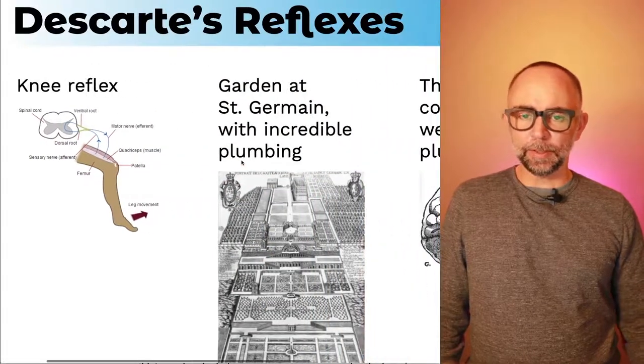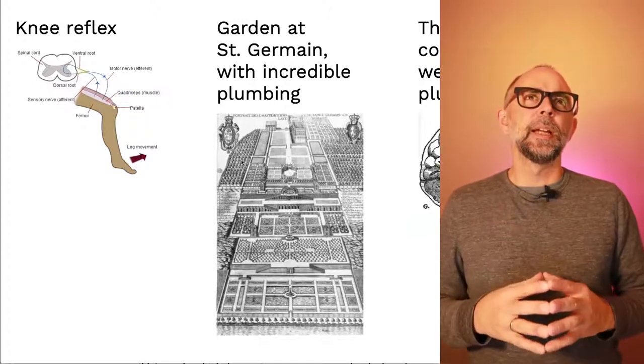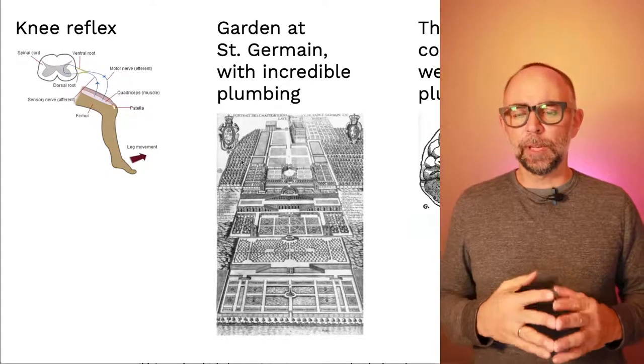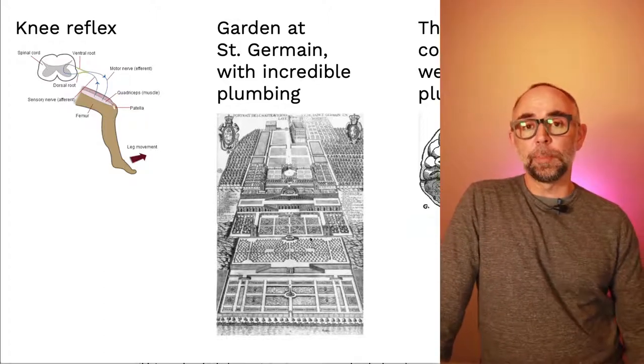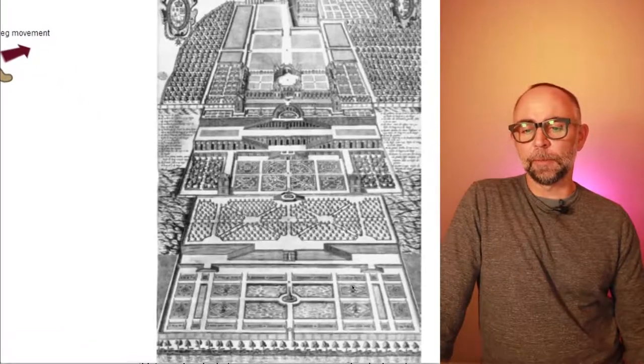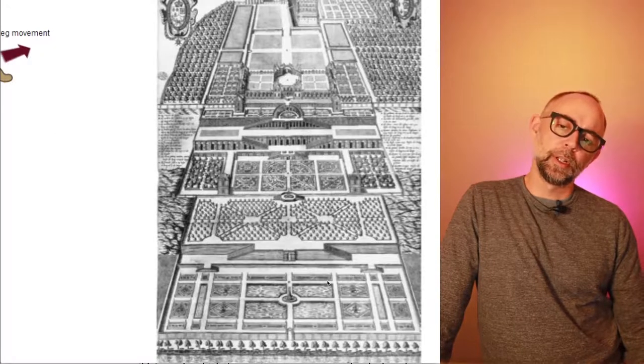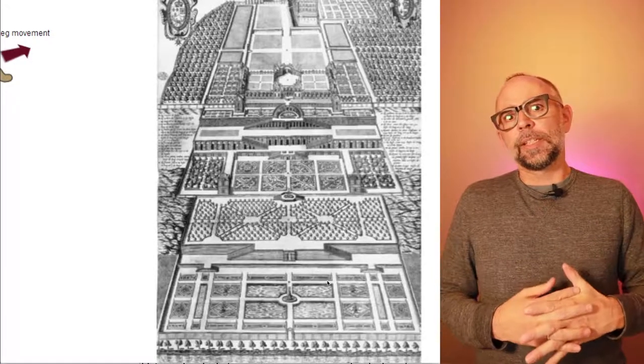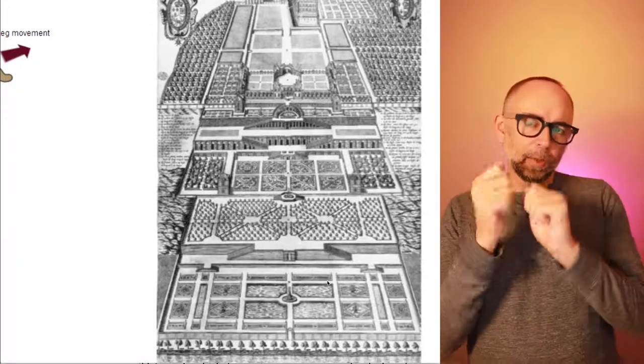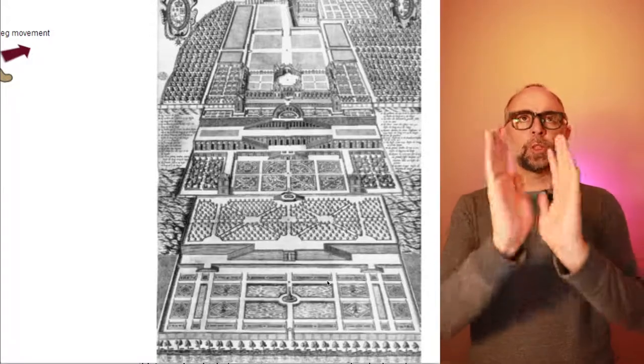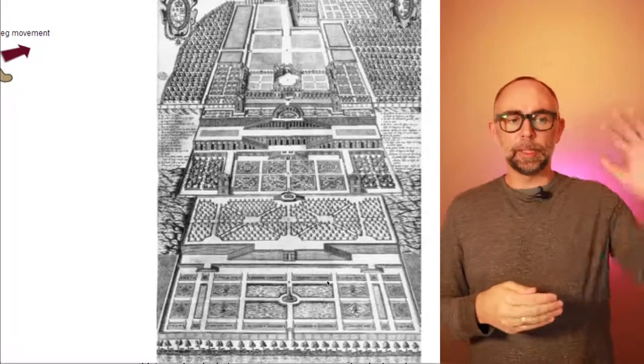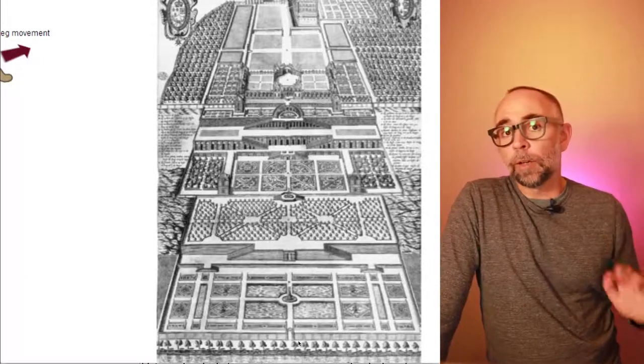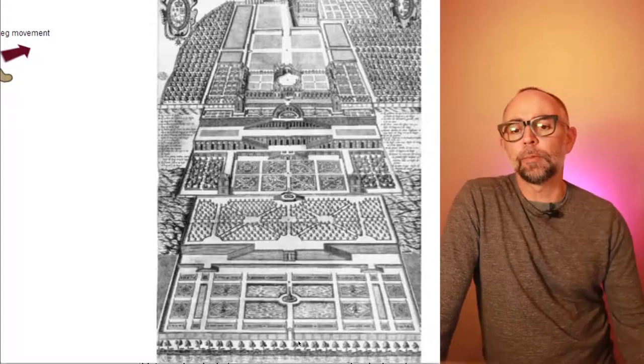So Rene knew about these reflexes. And he was thinking about them metaphorically because he had an example in mind. This thing called the Garden at Saint Germain. It was a garden of his time. And it had apparently a really incredible plumbing situation. Here's a picture of it. We could see there's maybe some fountains and stuff and there's trees and a big garden. One of the apparently notable features of this garden was these statues. These statues would be connected inside with hoses and stuff like that. And so if you squished water through the hoses, that could make an arm go like this or make maybe like a dolphin go like that or something. So it has this mechanized statue system.